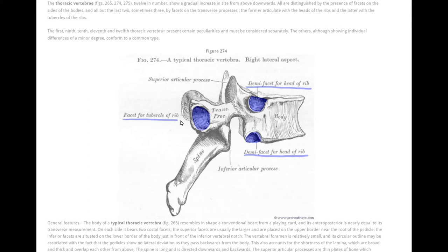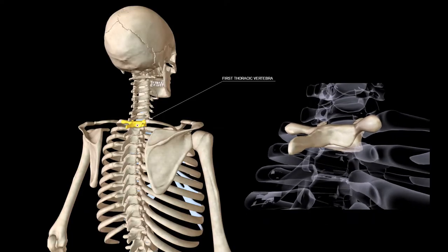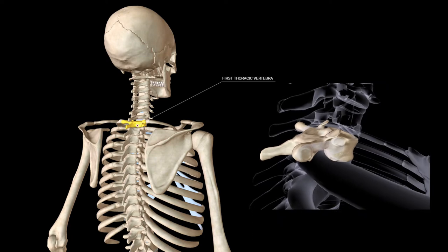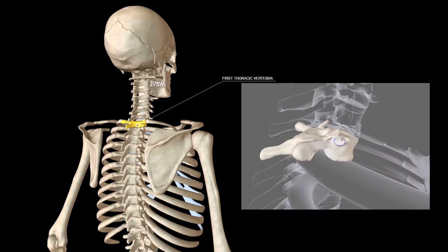So now what about the rest? What makes the other thoracic vertebrae so special? The first thoracic vertebra is distinguished by the character of the upper facets on the sides of the body. They are circular in outline as each articulates with the whole head of the first rib. Lower facets are small and semi-lunar in shape.